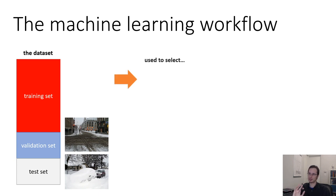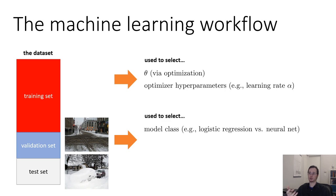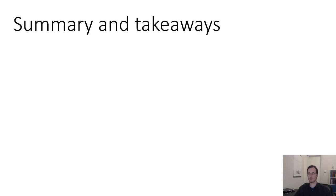Okay. So your training set is used to select θ via optimization. It's used to select your optimizer hyperparameters, like your learning rate. Your validation set is used to select your model class, regularizer hyperparameters, which features to use, things like that, basically things to mitigate overfitting. And your test set is used for, it's used only to report your final performance and hopefully nothing else.